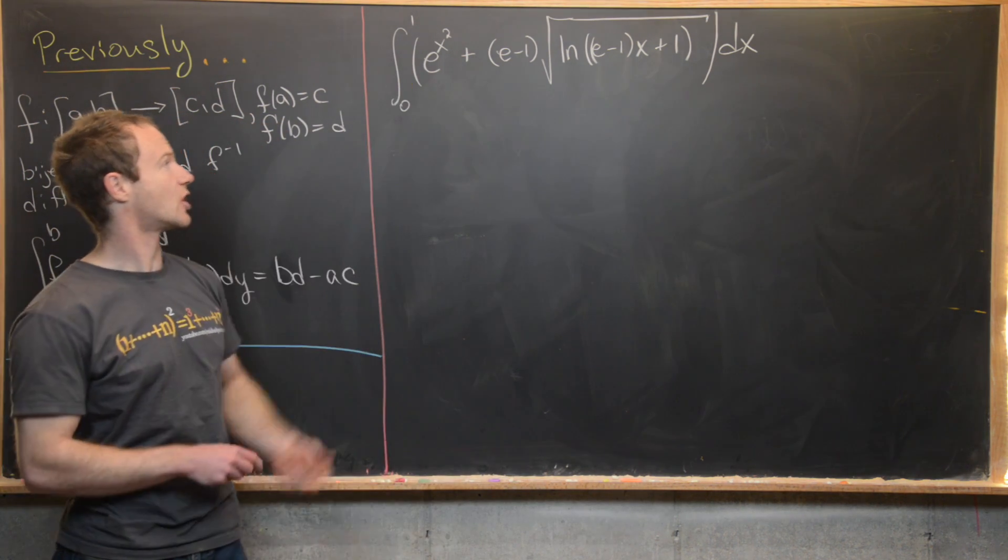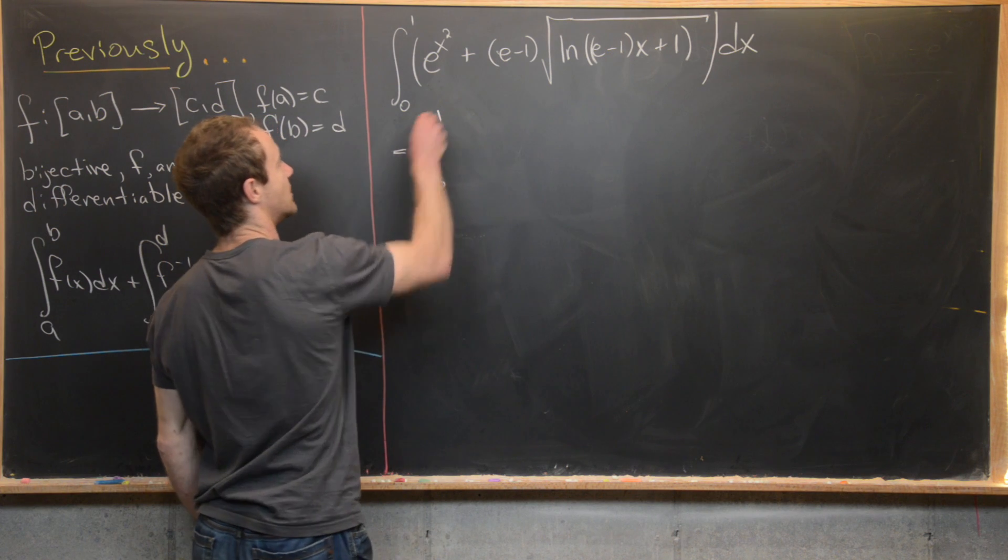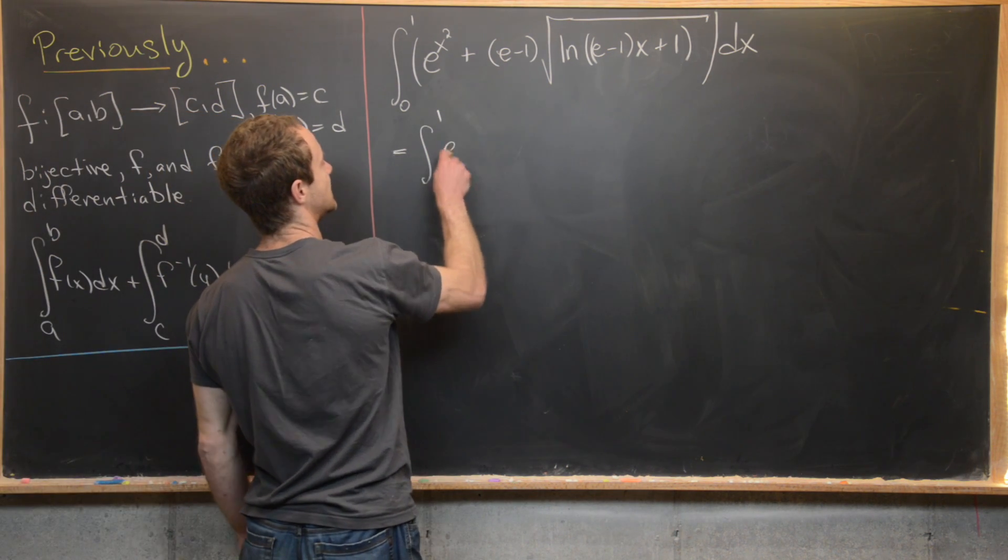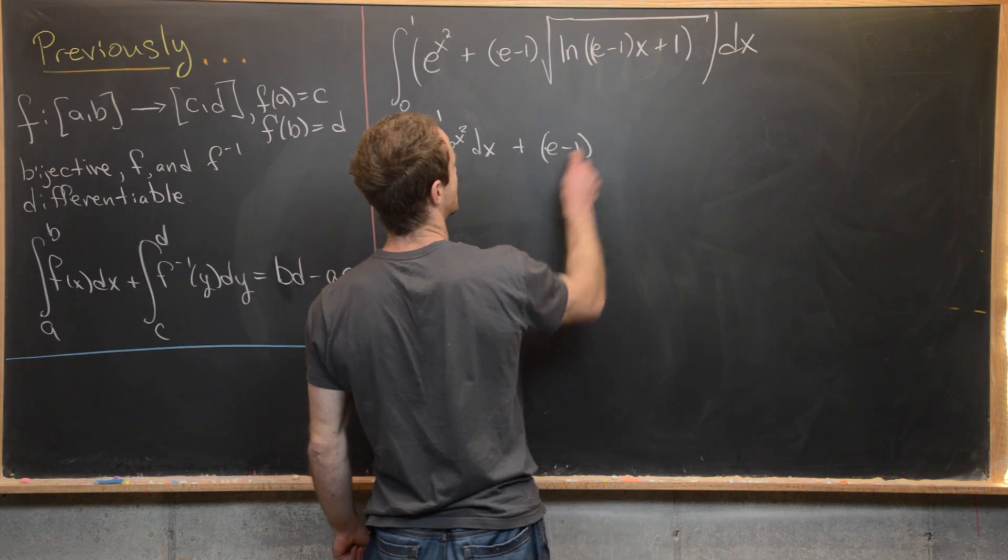So maybe we'd like to start off by taking this and writing it as the sum of two integrals. So we'll have the integral from 0 to 1 of e to the x squared dx plus (e minus 1) times